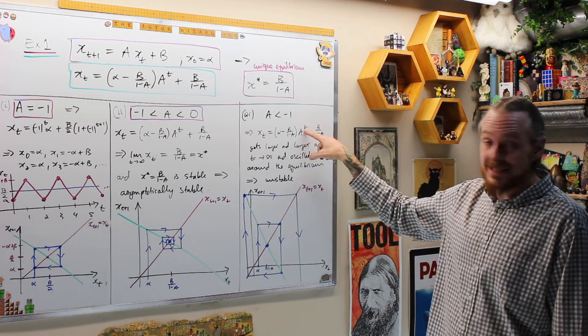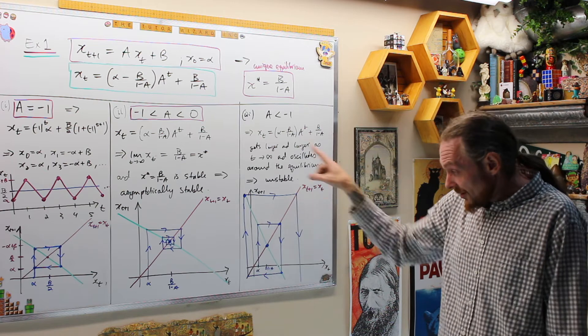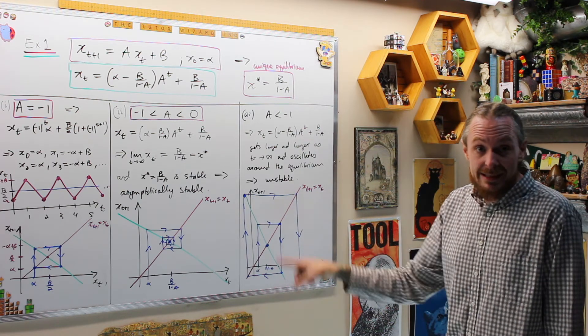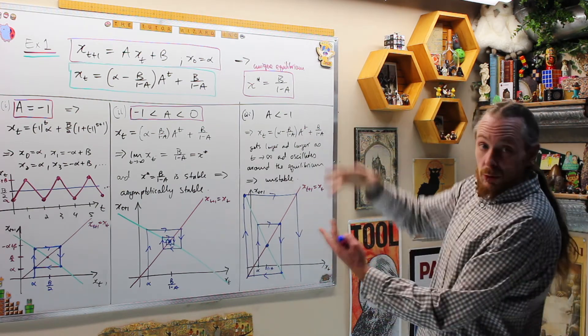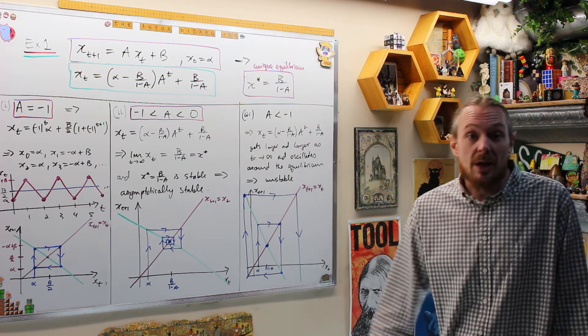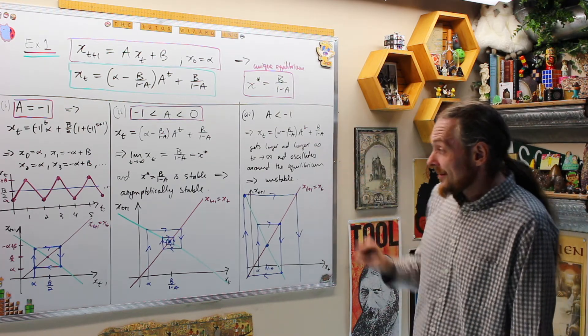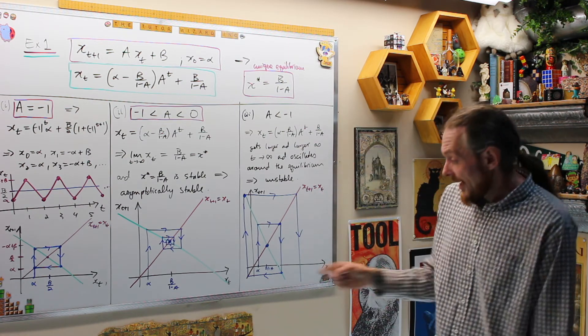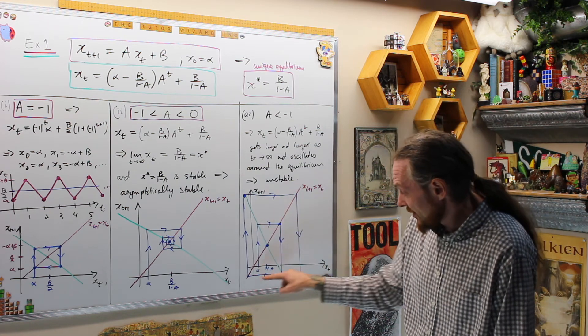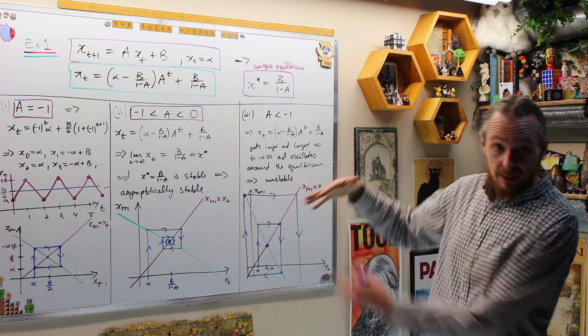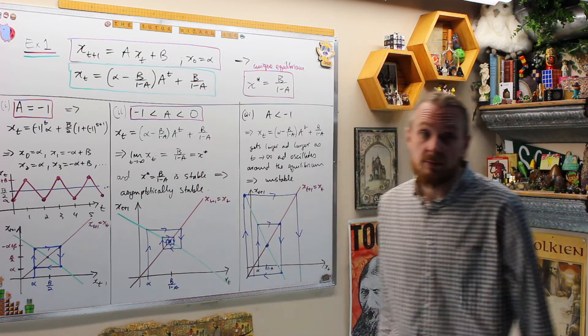And so it's going to oscillate around the equilibrium still, but it's going to grow and the values are going to get larger and larger over time, so this is definitely an unstable equilibrium. And of course, from the cobweb diagram, you can see that it's going to oscillate around it, but it's getting larger, not converging towards the equilibrium like we want.